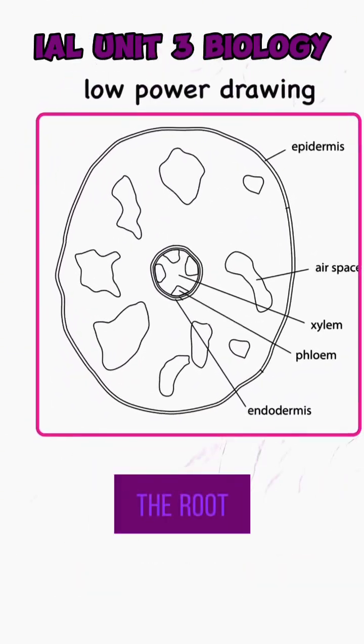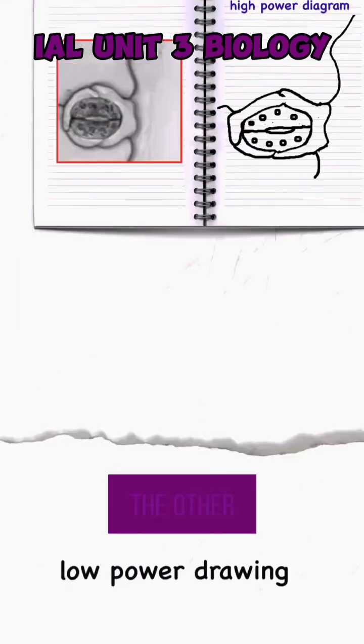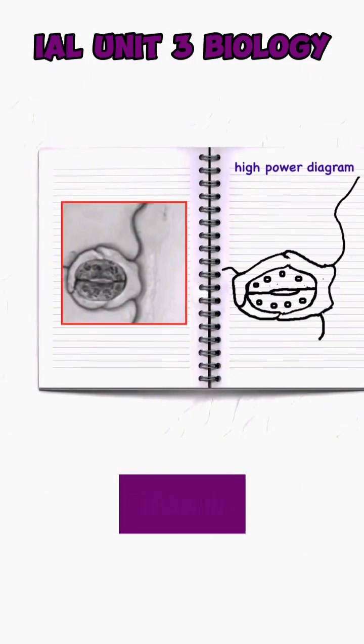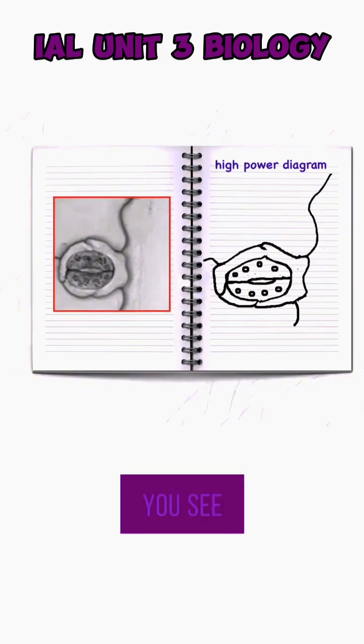In this example, the root is being drawn, showing the tissues rather than showing individual cells. The other type of drawing is the one where you draw in high power. Here you have to draw all the details that you see in the diagram.